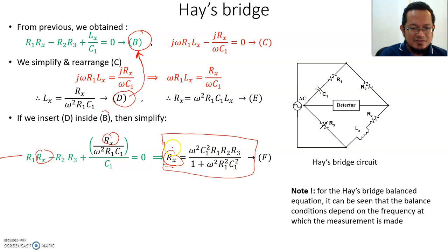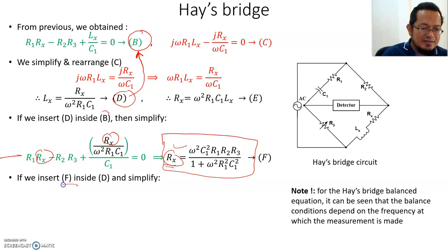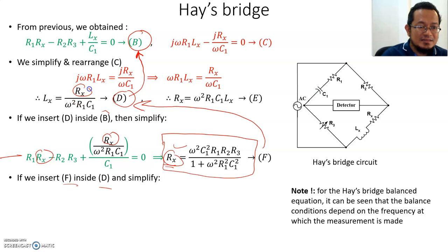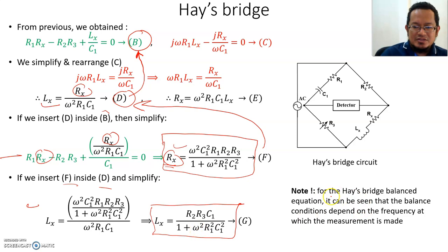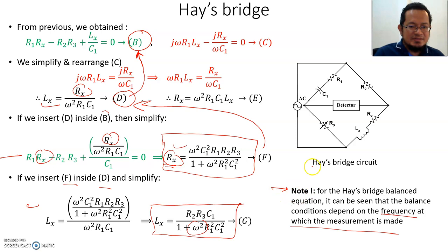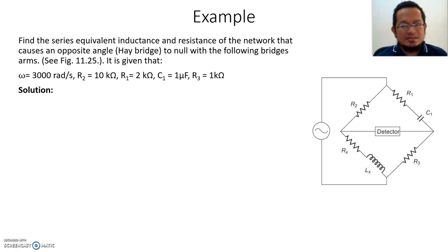Similarly, inserting equation (f) into equation (d) and solving for Lx gives the final equation for inductance in terms of resistance, capacitance, and frequency. Note that for Hay's Bridge, the balance equation shows that the balance condition depends on the frequency at which the measurement is made — a different frequency gives a different value of resistance and inductance.